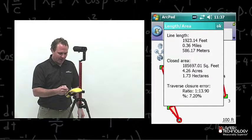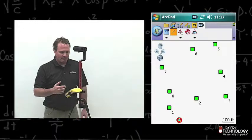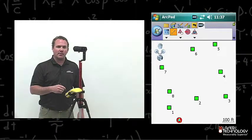I verify everything is correct. I hit OK. It goes back to the map. That's showing a quick traverse within LaserGIS for ArcPad.